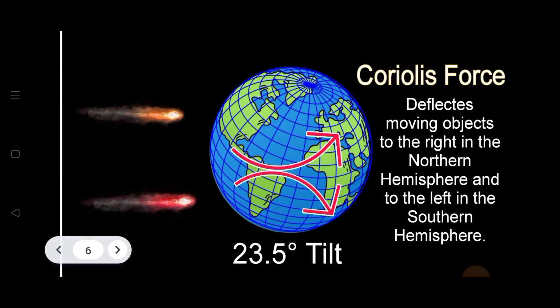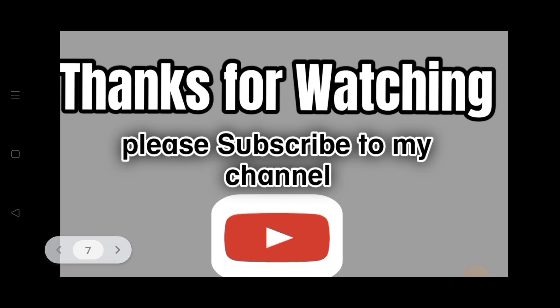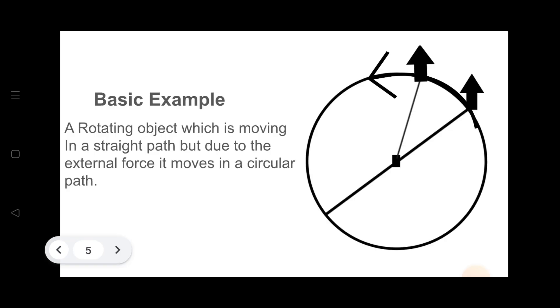So it may appear as if it is turning towards the northern or southern hemisphere, but it's really the rotation of the Earth that causes this deflection. As in the above example I explained, it was the external force due to which the object was moving in a circle.